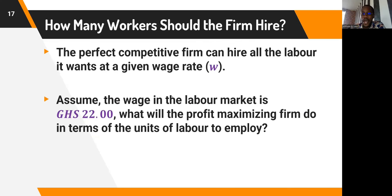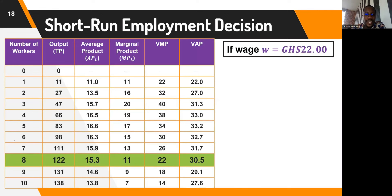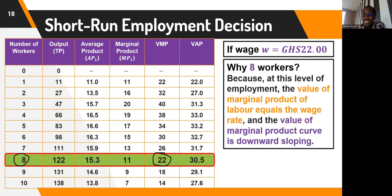How many workers should a firm hire? The perfectly competitive firm can hire all the labor it wants given a wage rate in the labor market. Suppose the wage is 22 Ghana Cedis. Going back to the table, we can see that at this wage rate, the firm will employ eight workers. Why? Because the value of the marginal product contributed by the eighth worker equals the existing wage rate — VMPL equals the wage rate.